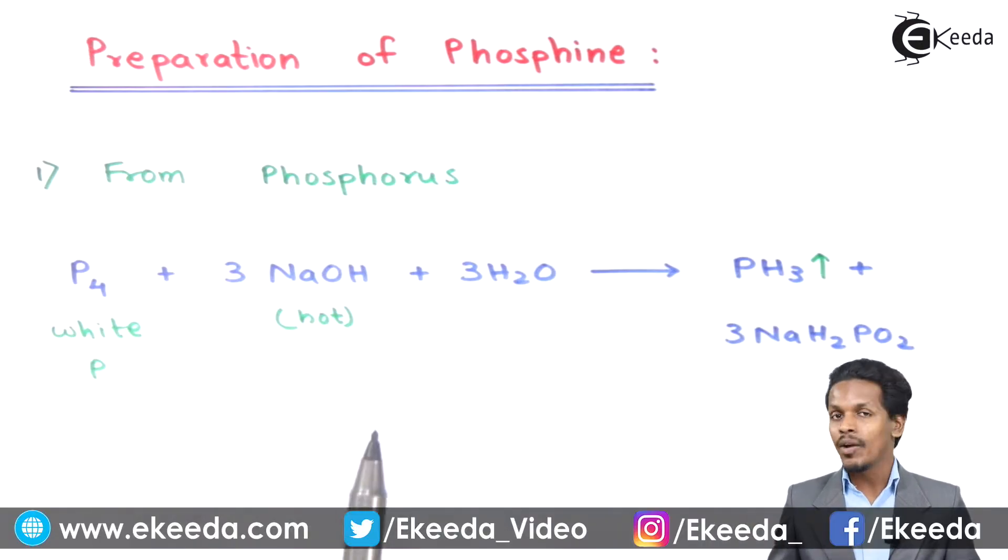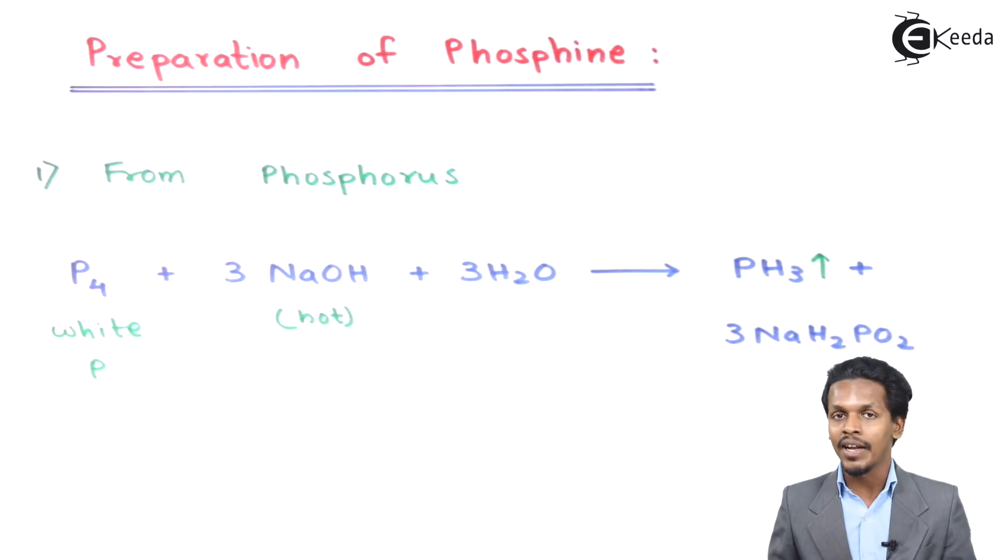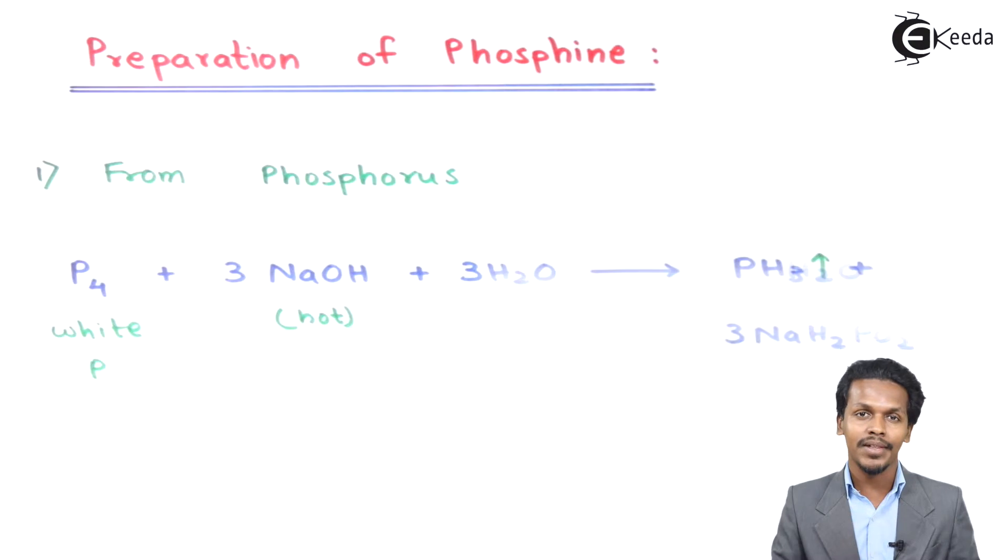The condition that we have to apply here is we have to sustain the inert condition of carbon dioxide. Because of the inert atmosphere of carbon dioxide, the reaction will proceed in such a manner that we could obtain phosphine. This was one method, and now let me talk about the other method.